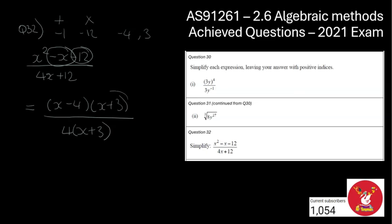And I'm liking what I see here because I can see a common bracket on the top and the bottom. So these brackets are actually going to divide and cancel each other out. So that means when I simplify this, it's going to be x minus 4, and all of that is divided by 4.